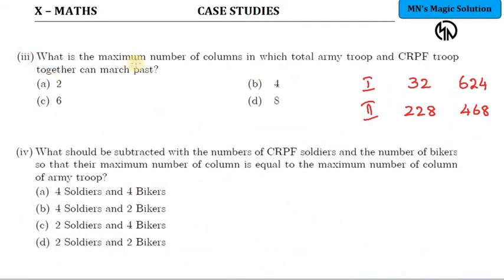Question number 3, maximum number of columns in which total army troop and CRPF troop together can march. See, here, maximum number of columns, army plus CRPF total. So in the 4 numbers, HCF you have to find.